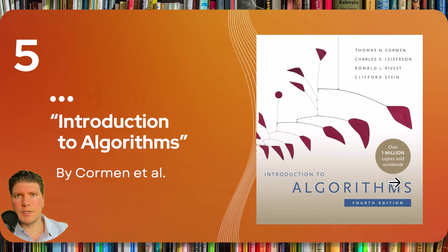Book number five is Introduction to Algorithms by Cormen et al., also known as CLRS after the last name initials of the authors. This book is a unique combination of rigor and scope. It covers a broad range of algorithms in depth while making the design and analysis accessible to any reader. It covers algorithmic foundations, advanced algorithm design and analysis techniques, graph algorithms, and selected topics.